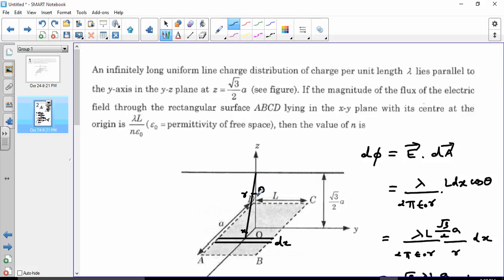Then we have this cos theta because of dot product. Cos theta is given by root 3 by 2a divided by r.